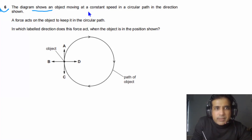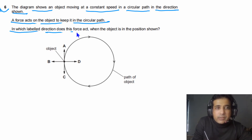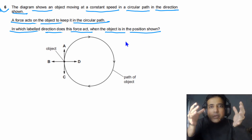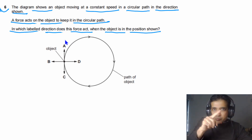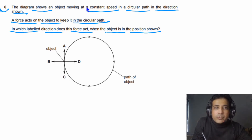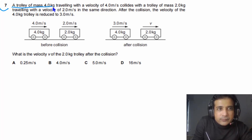For Question 6, an object moves at constant speed in a circular path. A force acts on the object to keep it in that circular path. Since speed is constant, the centripetal force must be directed toward the centre of the circle. The answer for Question 6 is D.